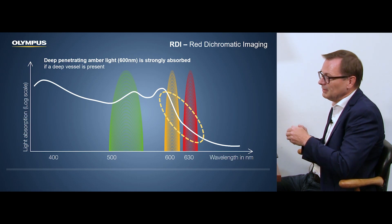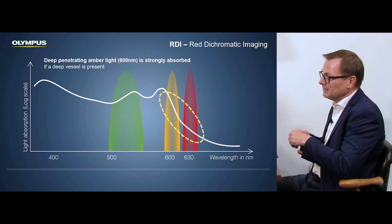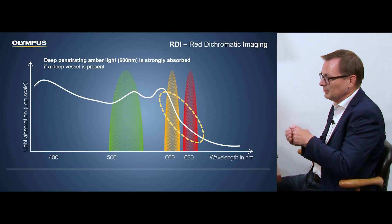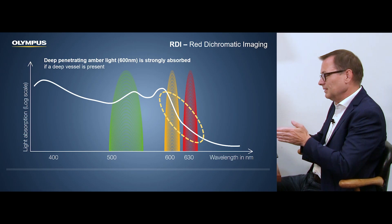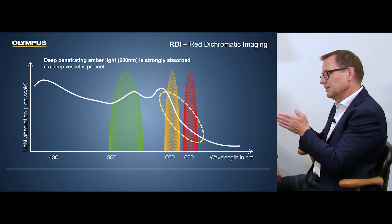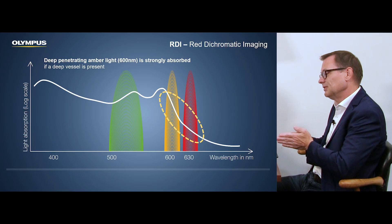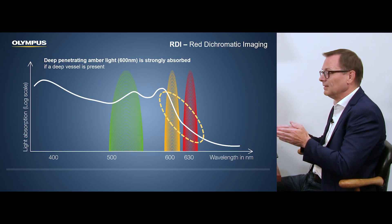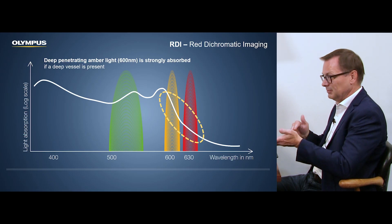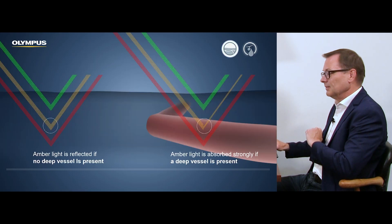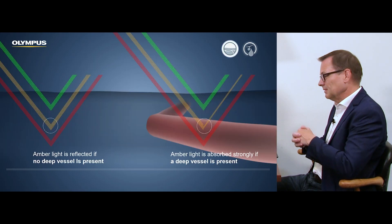As you can see here, the absorption curve of blood shows that particularly in the range of 600 to 630 nanometers — between those two colors — there is a steep decline. So if we use something around 600 and the color around 630 nanometers, we can nicely differentiate whether there is blood or no blood.